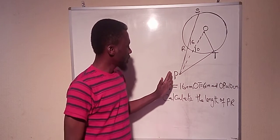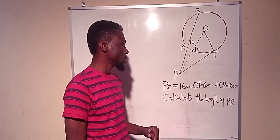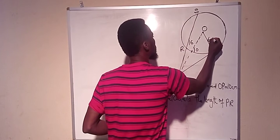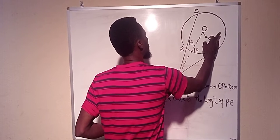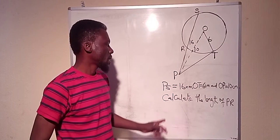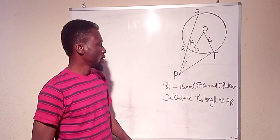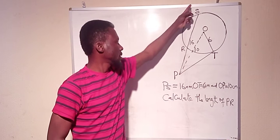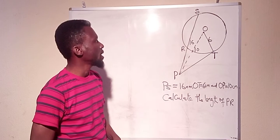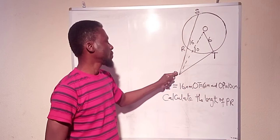Looking at this question, it says that PS from the diagram is equal to 16 centimeters. OT is equal to 6 centimeters, and OP is equal to 10 centimeters. We need to calculate the length of PR. We can see that PS is 16, so the whole of PS is 16.